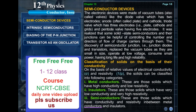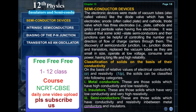Classification of solids on the basis of their conductivity. On the basis of relative values of electrical conductivity sigma and resistivity (1/ρ), the solids can be classified into the following categories: Metal conductors — those solids which have high conductivity and low resistivity. Insulators — those solids which have very low conductivity and very high resistivity. Semiconductors — those solids which have conductivity and resistivity in between metal conductors and insulators.